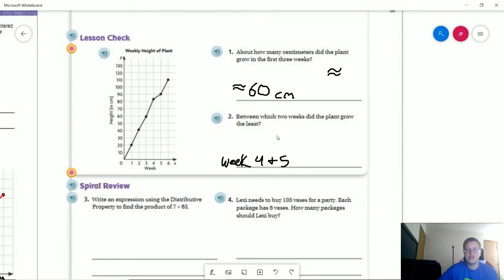And then number two, between which two weeks did the plant grow the least? It would be right here. So between weeks four and five.